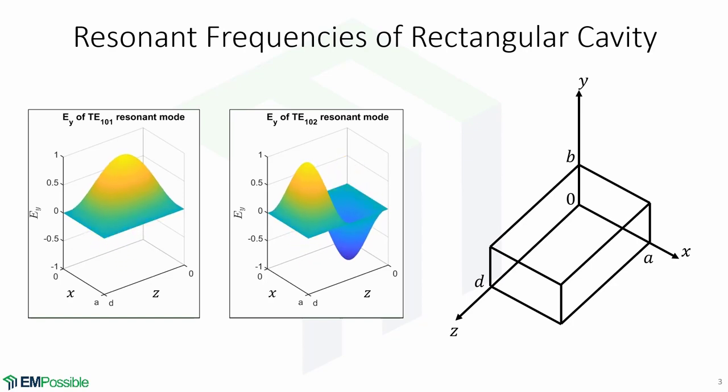Microwave resonators can also be constructed from closed sections of waveguide. The radiation loss from an open-ended waveguide can be significant, so these resonators are usually short-circuited at both ends, forming a closed box or cavity. Electric and magnetic energy is stored within the cavity enclosure and power is dissipated in the metallic walls of the cavity,